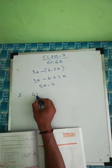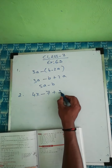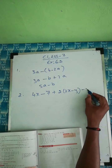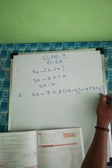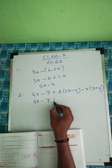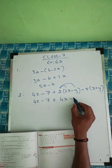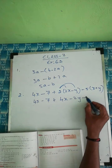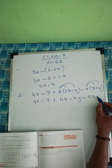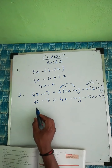Question 2: 4x minus 7 plus 2 into 2x minus y, minus 5 into x plus y. Expanding: 4x minus 7, then 2 times 2x is 4x, 2 times minus y is minus 2y, then minus 5 times x is minus 5x.